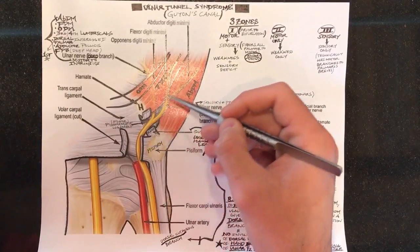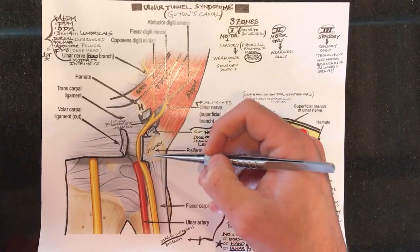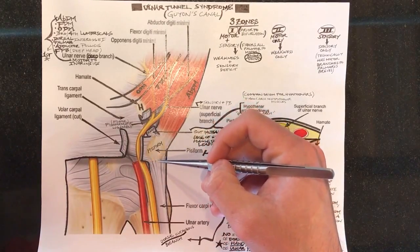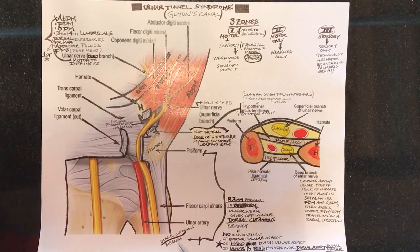So first of all, let's just talk about the ulnar nerve proper. It's coming down here on the ulnar aspect and it's very important that 8.3 centimeters proximal to the pisiform, you'll see that the dorsal cutaneous sensory branch comes off.